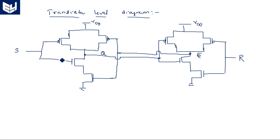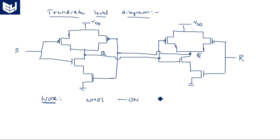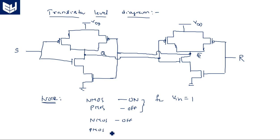The first NAND gate has input S and output Q. The second NAND gate has input R and output Q bar. The output of the first gate is connected as input to the second gate, and the output of the second gate is connected as input to the first gate. We know that an NMOS transistor turns ON when input is equal to 1, and a PMOS transistor turns ON when input is equal to 0. With this, we can analyze the circuit.